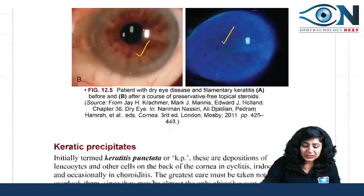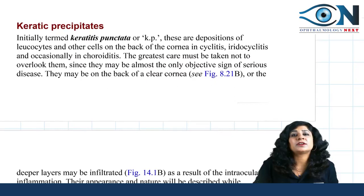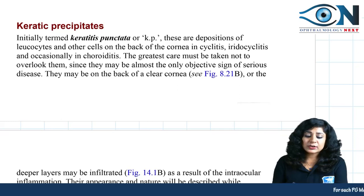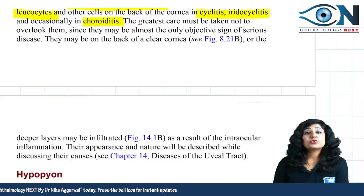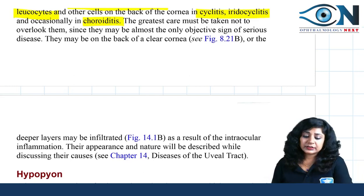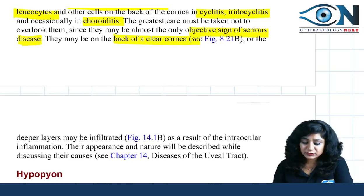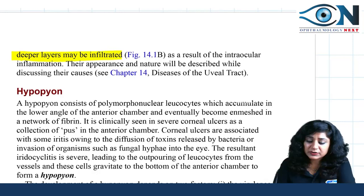Keratic precipitates (KPs) were initially called keratitis punctata. These are inflammatory cells — leucocytes or other cells — deposited in cases of iridocyclitis or choroiditis. They are usually present on the posterior surface of the cornea and should never be overlooked, as they indicate acute activity and are sometimes the only signs of a serious underlying disease.